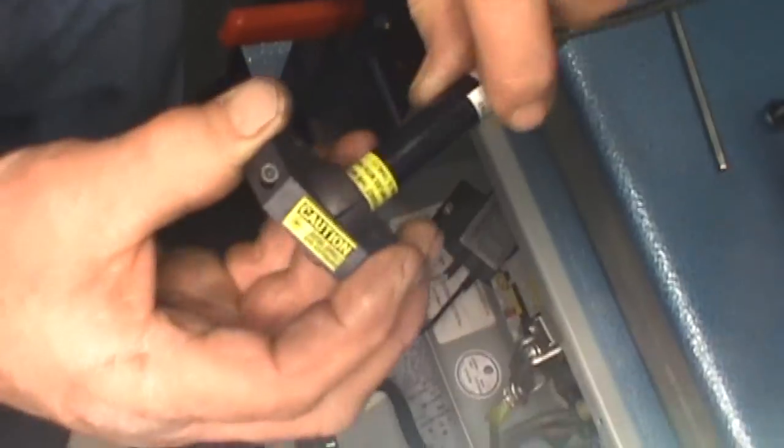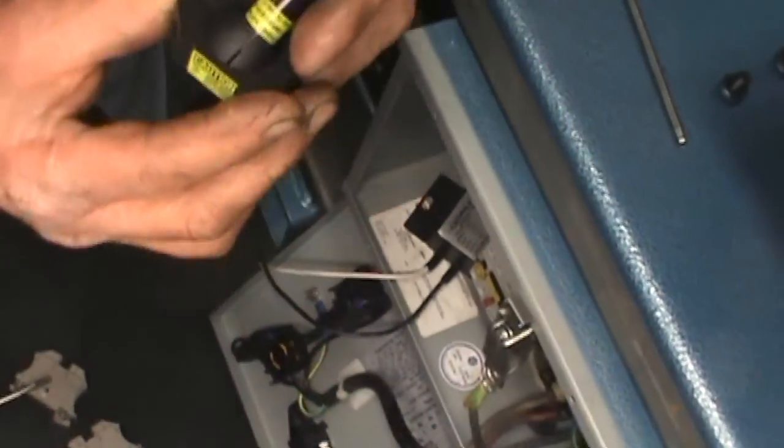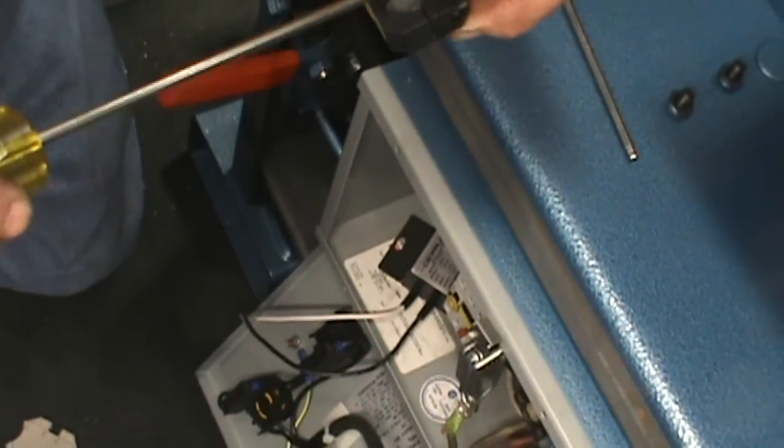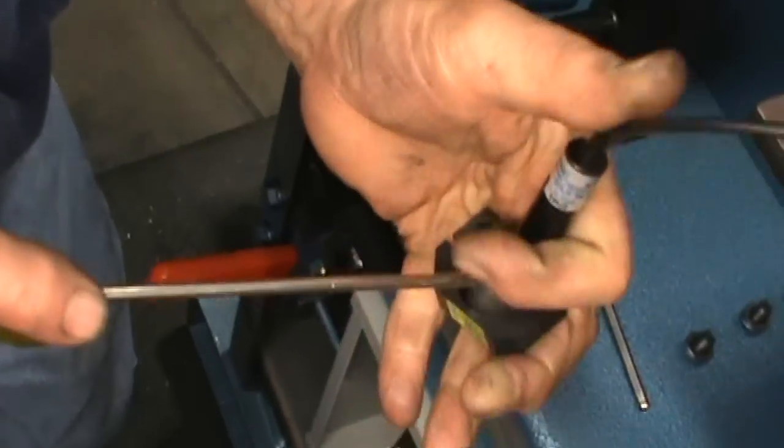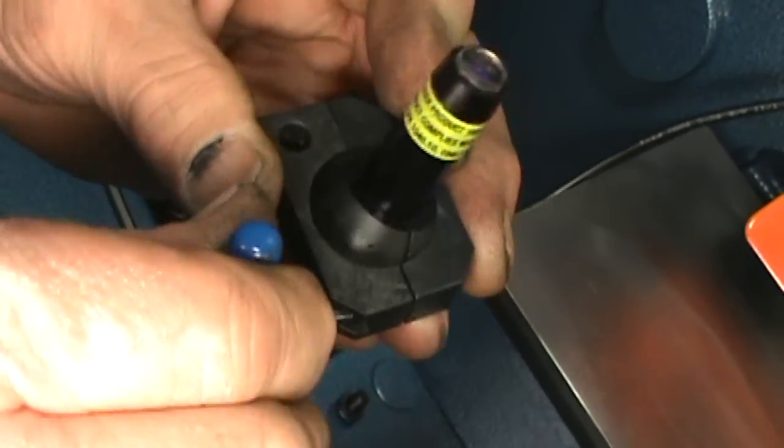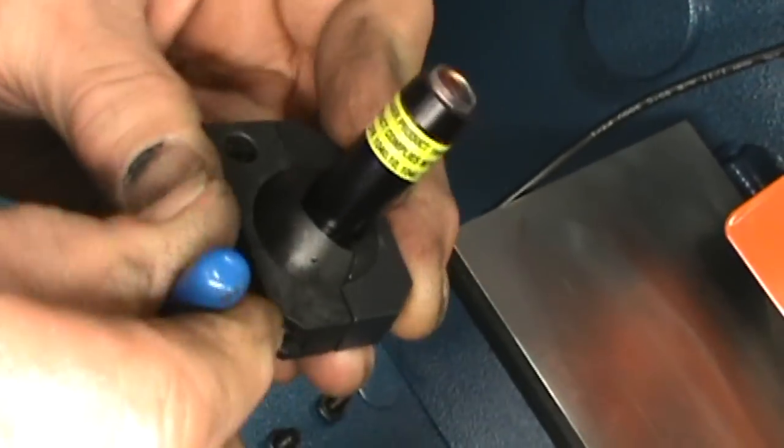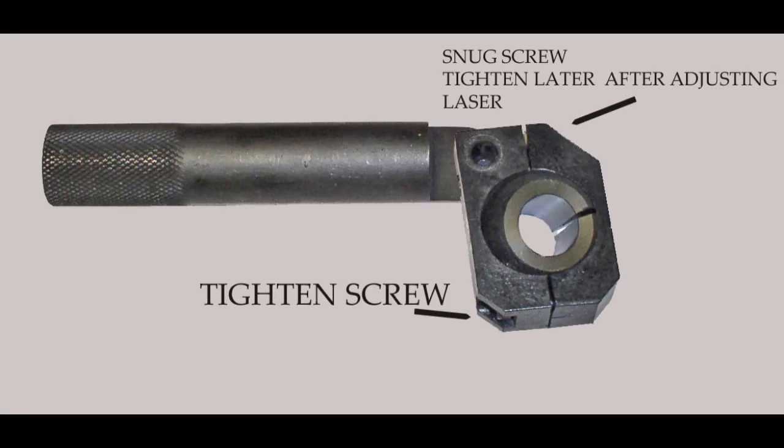Now we are going to put the laser back in the laser mount. With a straight screwdriver, spread the laser holder and push the laser back in. With an L wrench, tighten the collar around the laser holder. Just snug the one screw a little bit so you have easy access to adjust later. And then tighten.